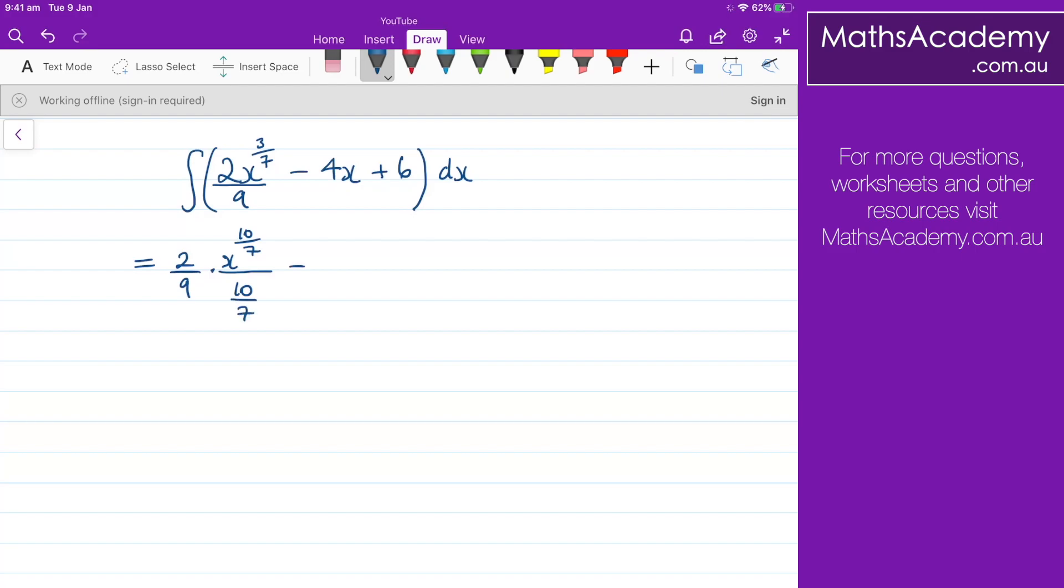The 4x when we integrate that we're going to get 4x squared over 2. The 6 will get 6x and we just need to add on the constant of integration. Now we can do a little bit of tidying up.